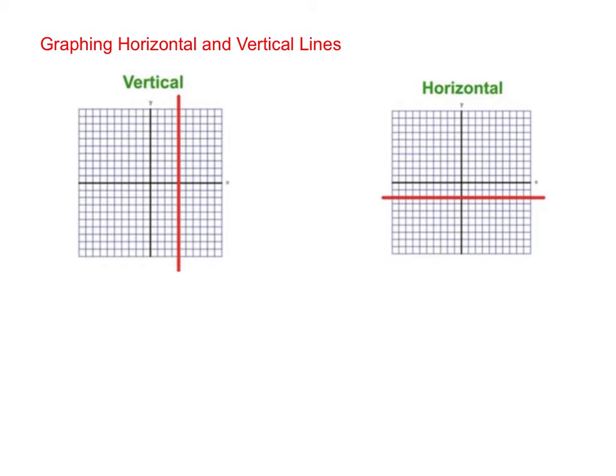Number 5 on your 1.1 and 1.2 quiz review has to do with graphing horizontal and vertical lines. Remember that vertical lines are lines that go straight up and down and their equations have a special format. For a vertical line, the equation will always be x equals and then a number. And that number is gonna be where the graph crosses the x-axis. We call that the x-intercept.